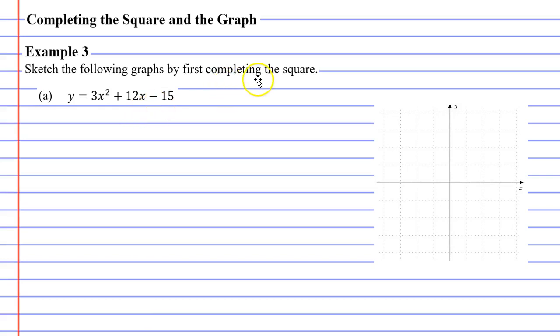Now the first thing we need to do is complete the square. The good thing is we did this question back in example 1, and when we completed the square we got 3 bracket x plus 2 squared minus 27.